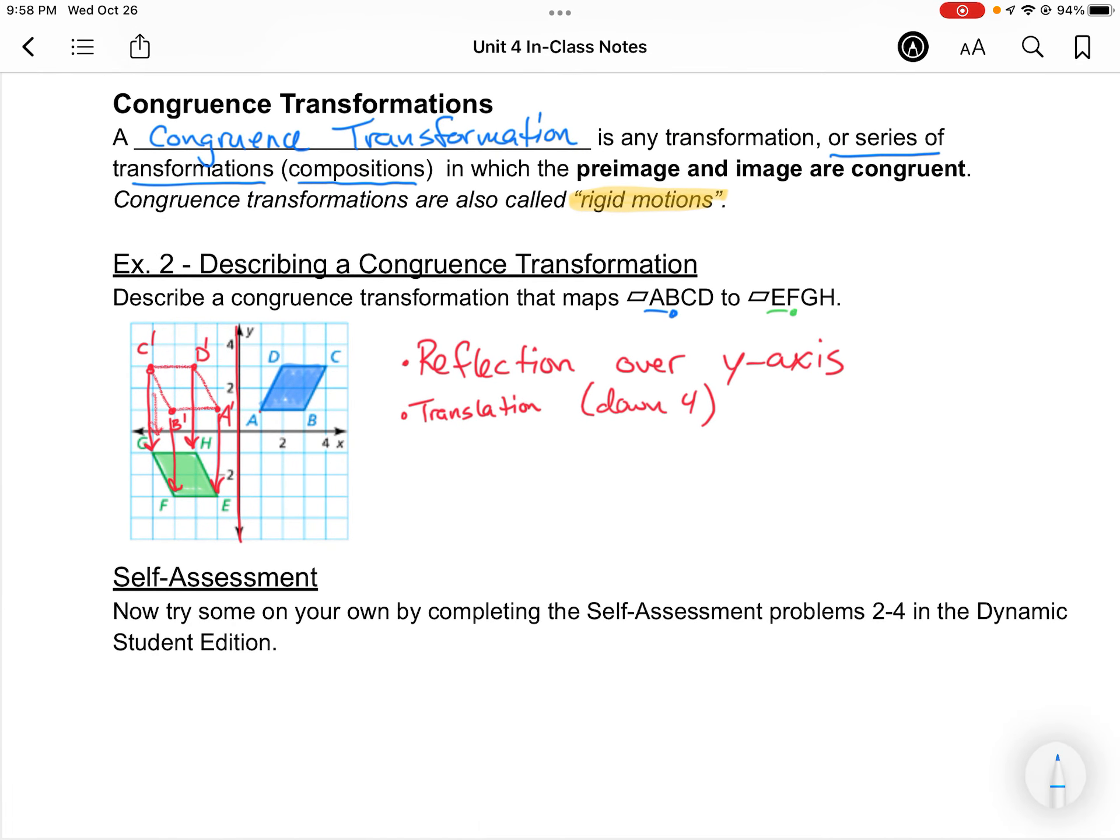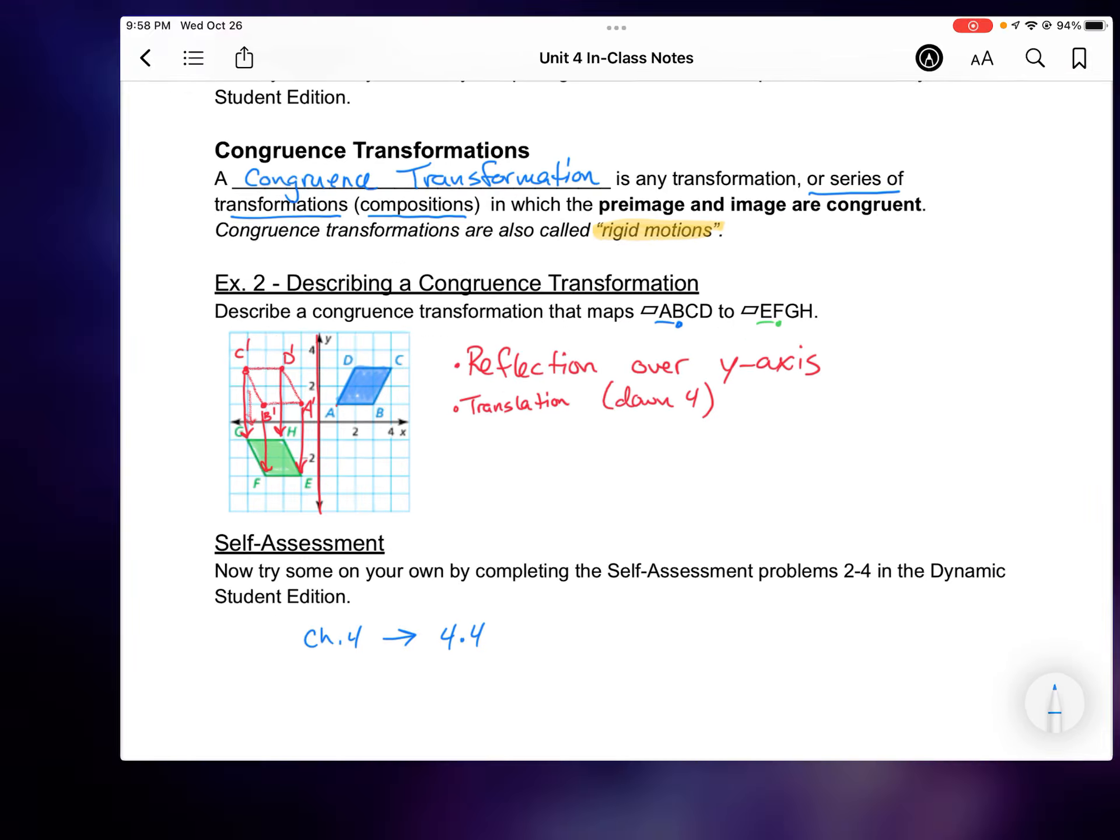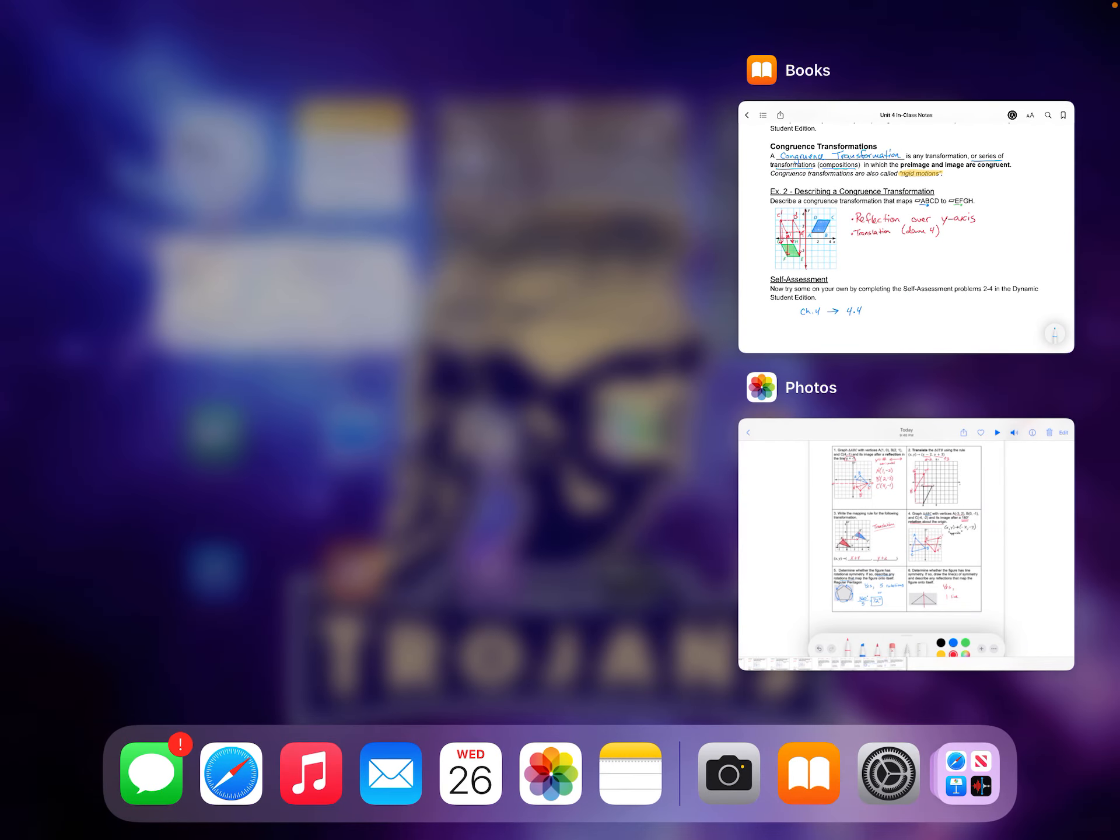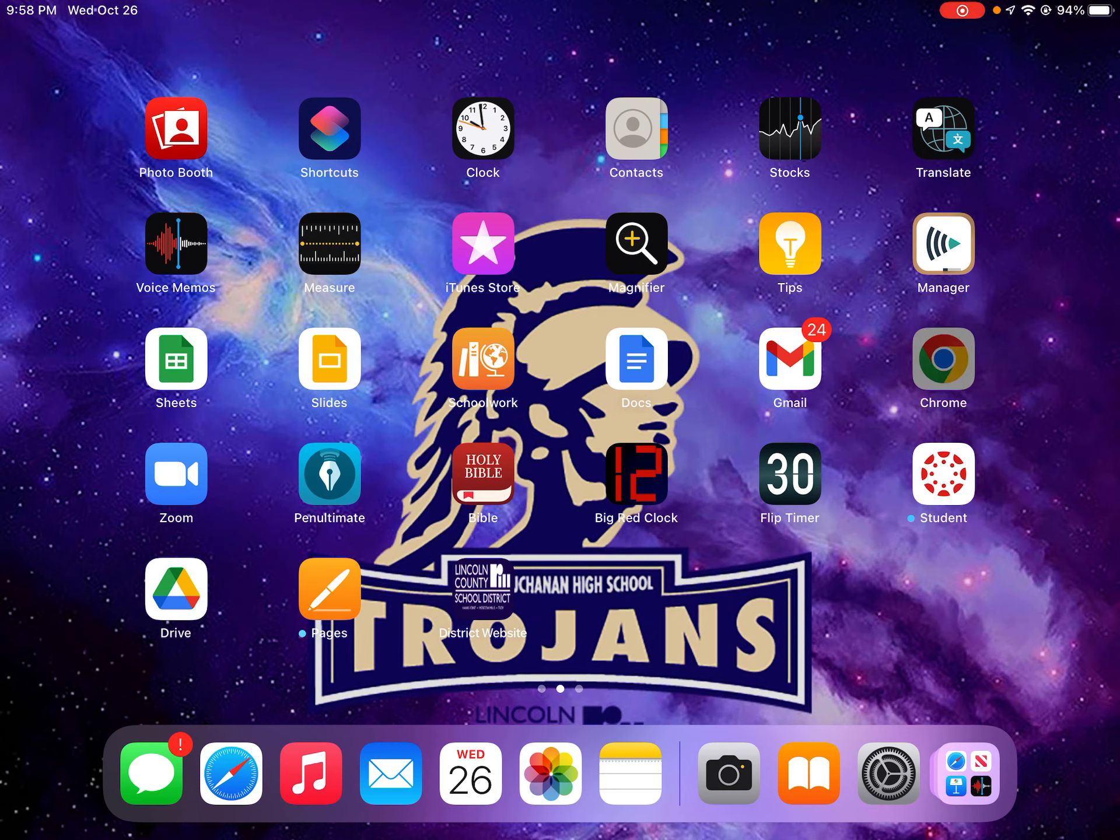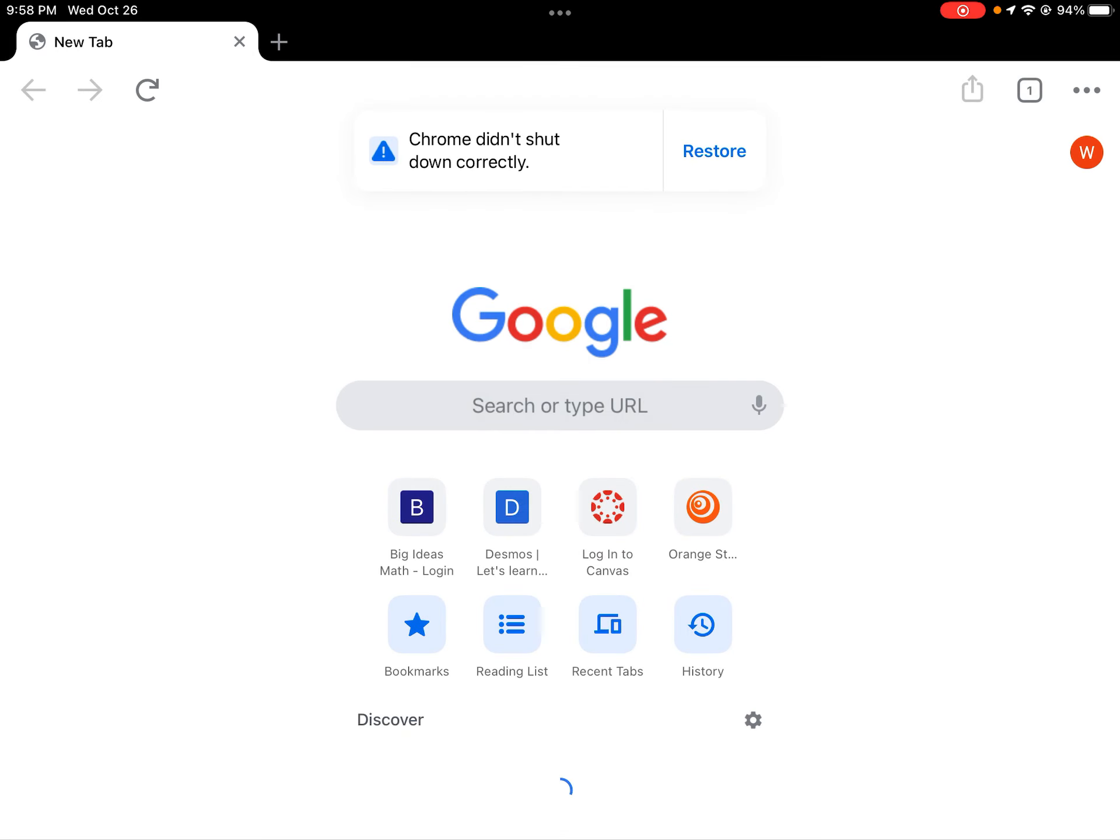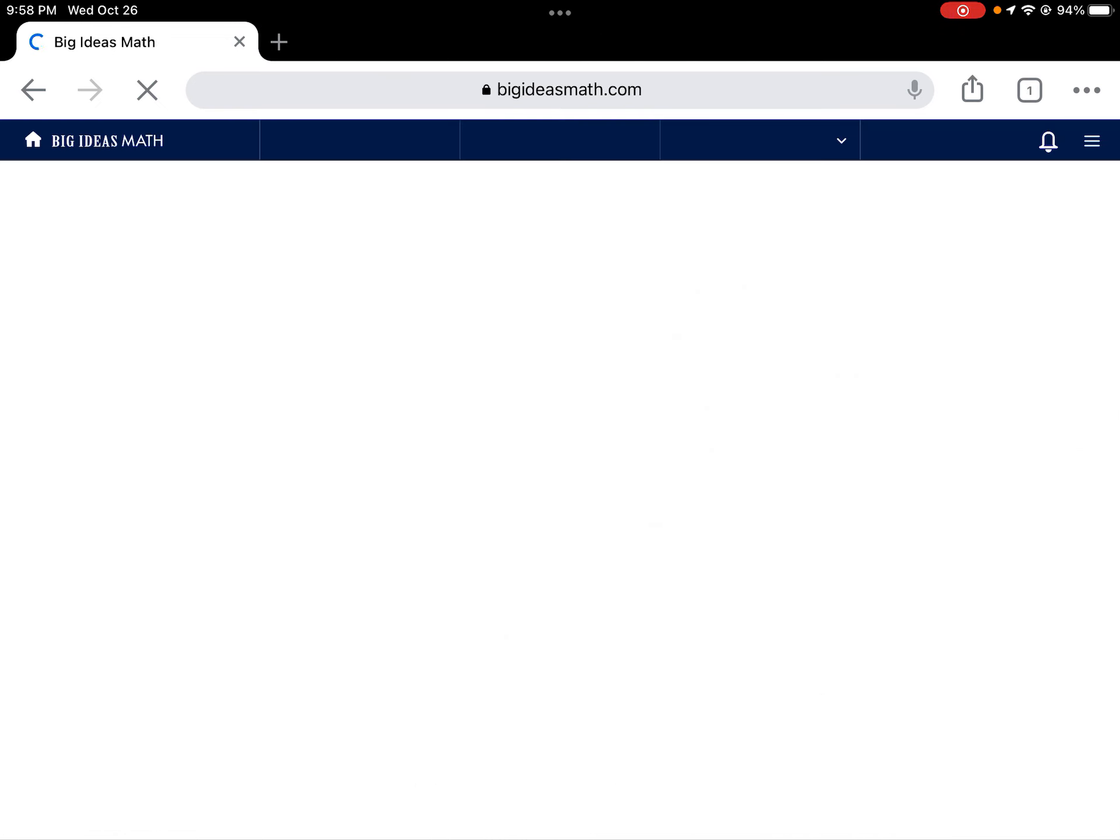What I want you to do now before moving on to the assignment, I want you to go to the self-assessment part of the Dynamic Student Edition and Big Ideas. So make sure you go to Chapter 4, Lesson 4.4, and you're going to find the second folder. I'll actually just show you.